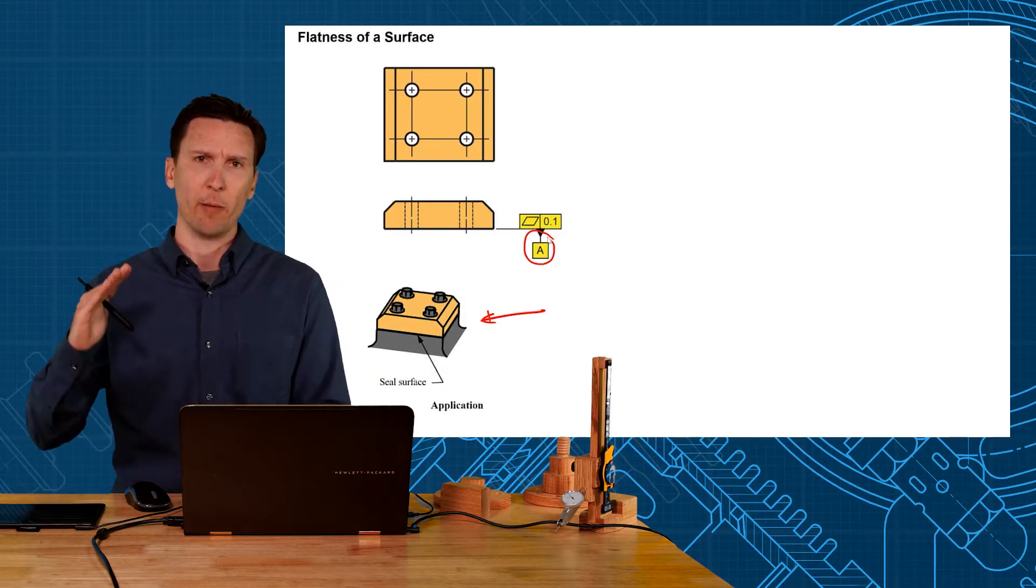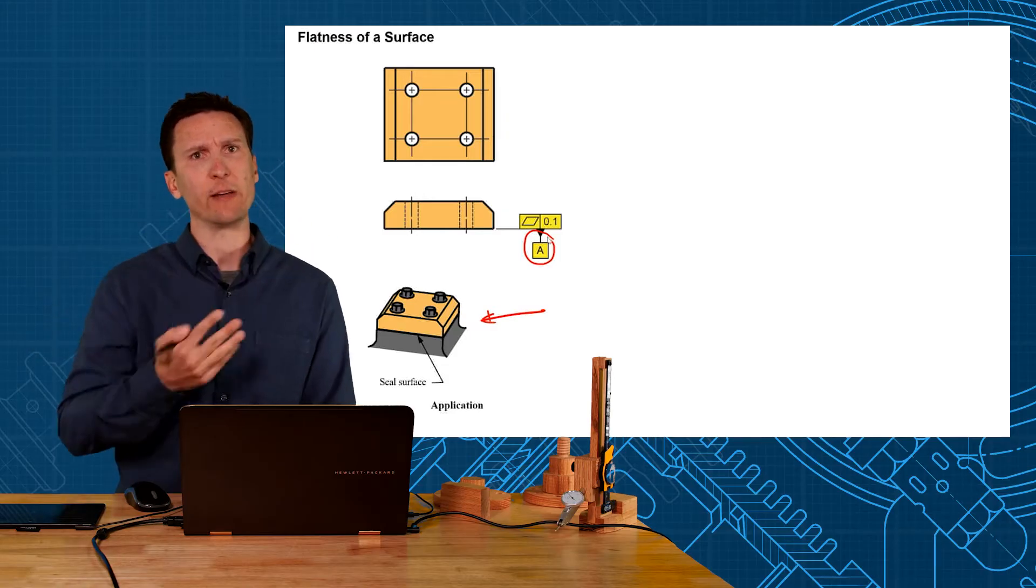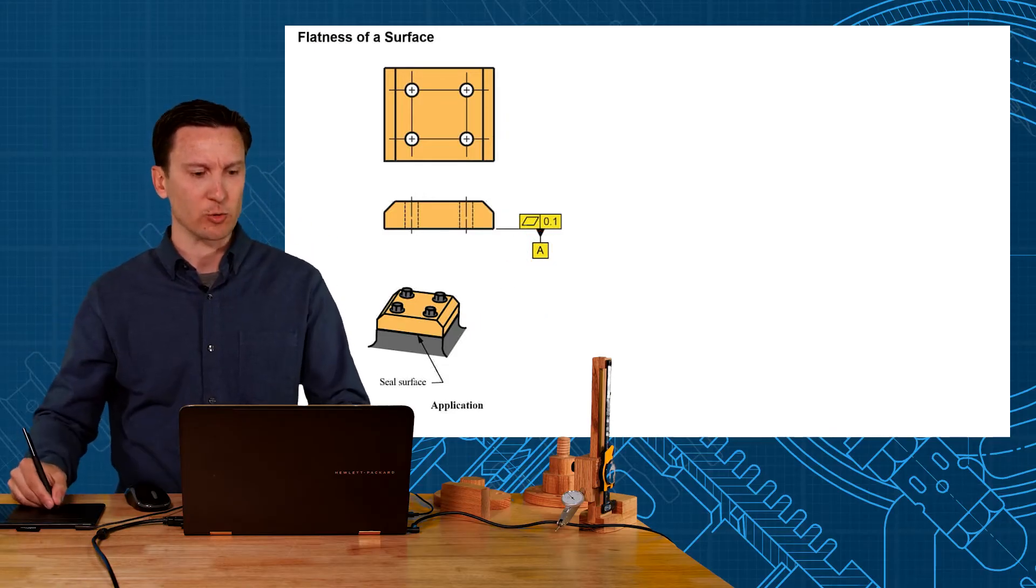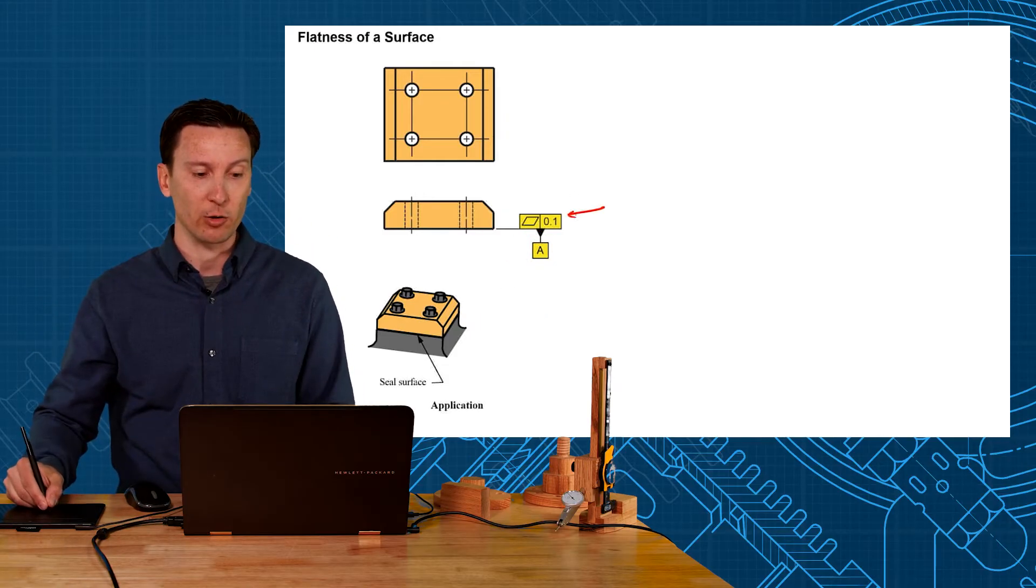It creates a plane on the high points, but we still don't know how rough and wavy the actual surface is, so that's why we qualify the datum feature with a flatness.